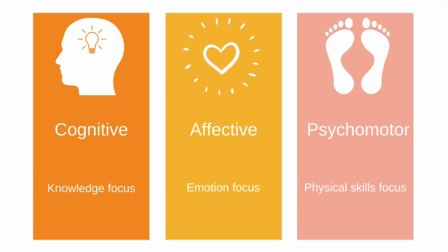There are actually three versions of the taxonomy, one for each of the following domains. Firstly, the cognitive domain, which focuses on the acquisition of knowledge. Secondly, the affective domain, which focuses on feelings, emotions and attitudes of the individual. And finally, the psychomotor domain, which focuses on manual or physical skills.